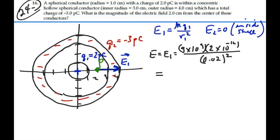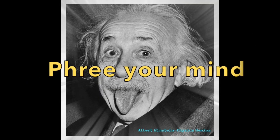And so what is this? 9 times 10 to the 9 times 2 times 10 to the minus 12 divided by 4 times 10 to the minus 4 gives me 45 newtons per coulomb. As I have drawn it, it would be to the right like that. So that is the electric field 2 centimeters from the center of these conductors: 45 newtons per coulomb, and it is only due to the positive charge on the inside. We'll see you next time.